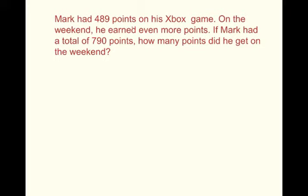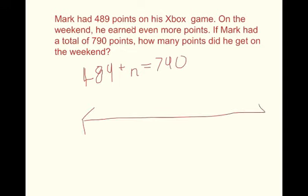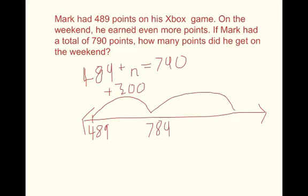So, 489 plus N equals 790. So I'm going to write an addition number line. 489 plus 300 would get you to 789. And then you just have to add 1 to get to 790. So the answer would be 301.